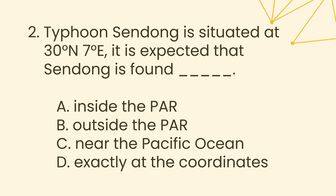Question 2. Typhoon Sendong is situated at 30 degrees north, 7 degrees east. It is expected that Sendong is found ___. A. Inside the PAR, B. Outside the PAR, C. Near the Pacific Ocean, D. Exactly at the coordinates.